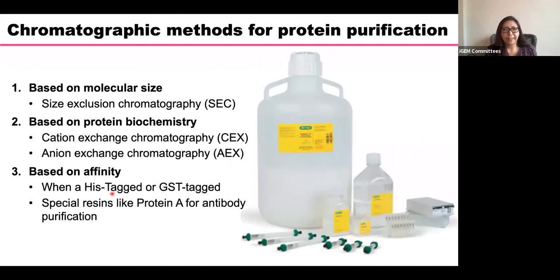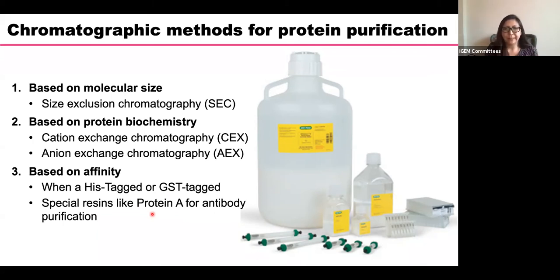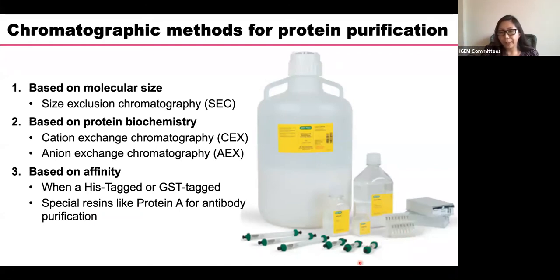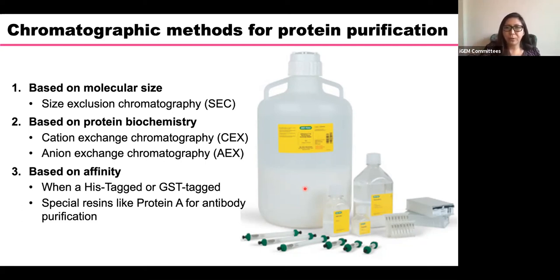In the pharma industry, resins like Protein A resin are commonly used to selectively catch antibodies. These resins come in different forms: robot columns for automated purification, pre-packed columns that companies sell ready-to-use in different sizes, or bulk bottles of resin where you pack the column yourself for larger-scale production.